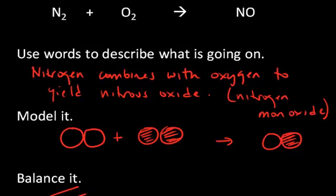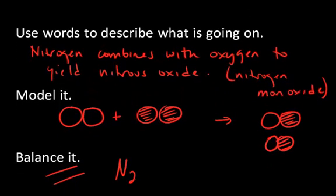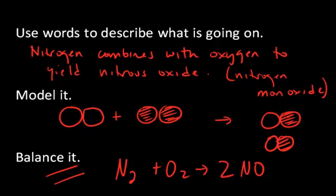In this case, we have two nitrogens but only one on this side. So if I put a two on the right hand side, I now have two, and I could draw two since I'm drawing right now, two molecules of nitrous oxide. And then to write it correctly, like a chemist would, say nitrogen plus oxygen gives two nitrous oxide.